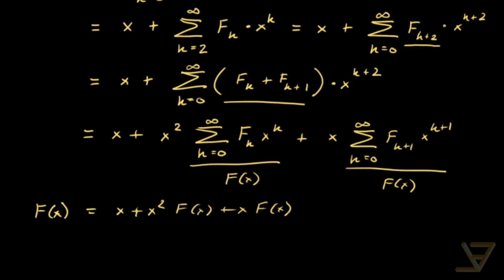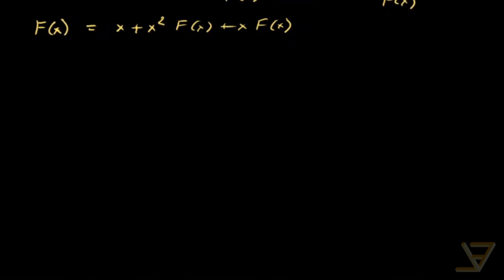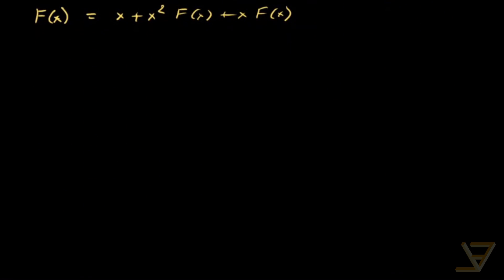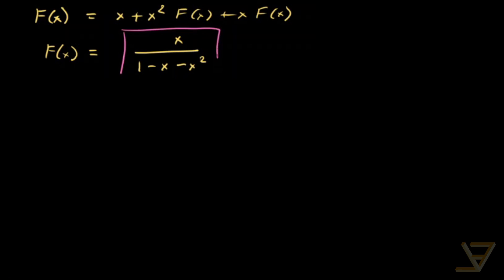So we find that F(x) — the original term on the far left — is equal to x plus x² F(x) plus x times F(x). We can isolate F(x) now. Once we do that, we find that F(x) is equal to x over 1 minus x minus x squared. This is what the generating function for the Fibonacci numbers converges to in some interval around 0.